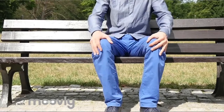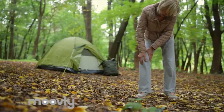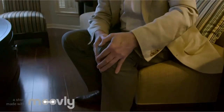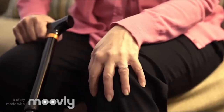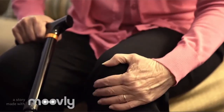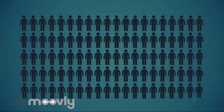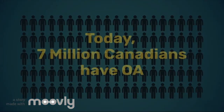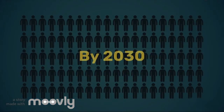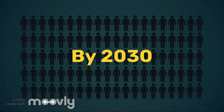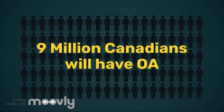Our knees are the largest joints in our body and are essential for everything we do. If you or a loved one is suffering from OA, everyday activities such as walking, sitting, and kneeling can feel debilitating. OA affects nearly 7 million people in Canada to date, and it is predicted that by 2030, approximately 9 million Canadians will be dealing with OA.